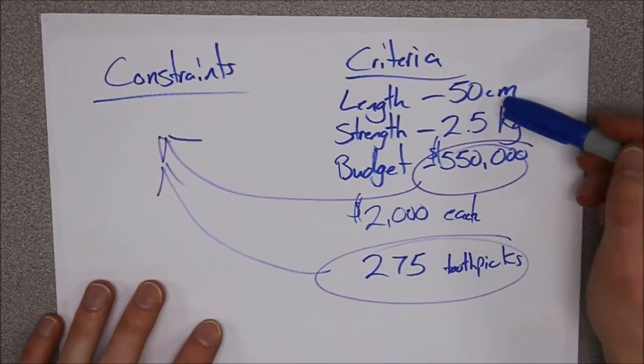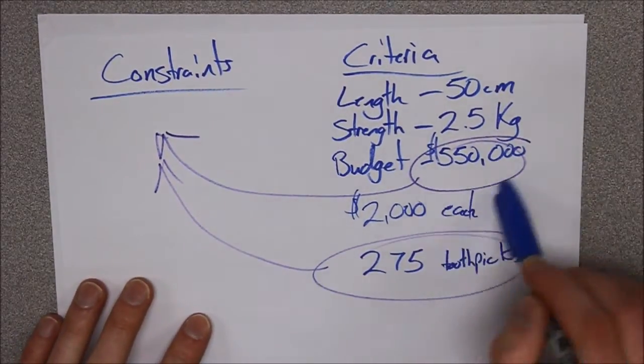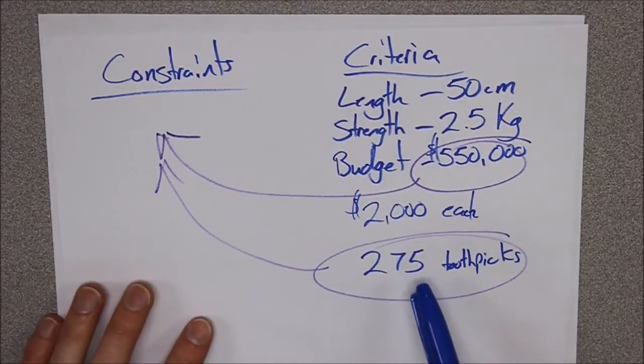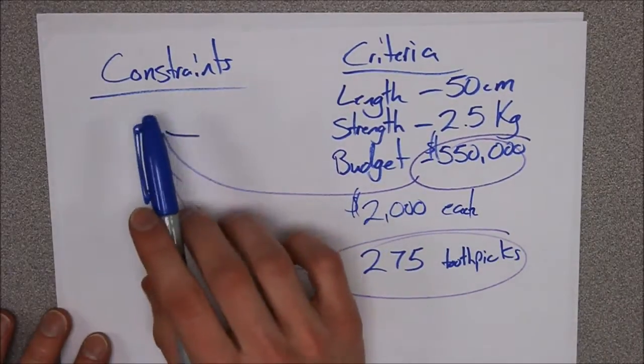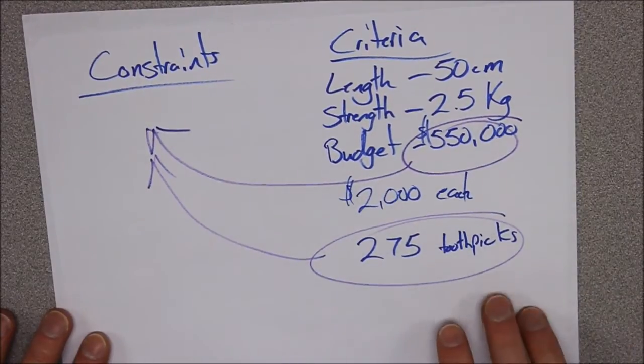Okay, now in this next part we're going to be talking about the criteria that we need to look at: the 50 centimeters, the 2.5 kilograms, and our budget that we need to keep under, as well as our constraints—things that we're going to be limited by—and work on our design.